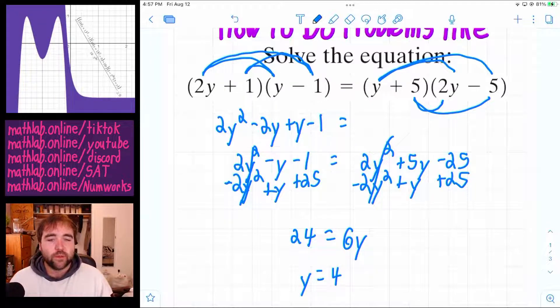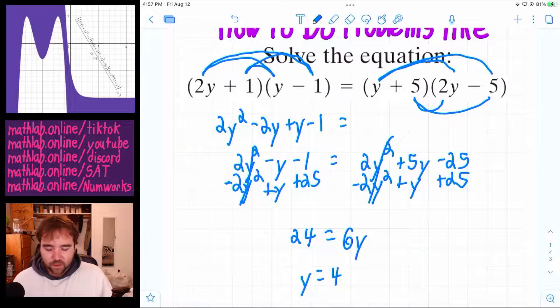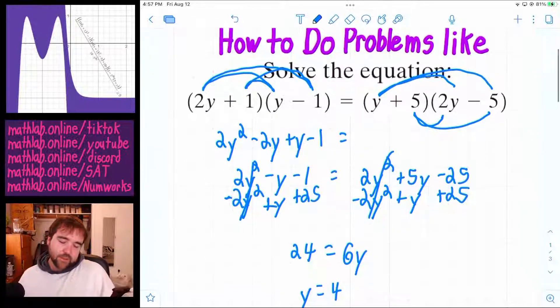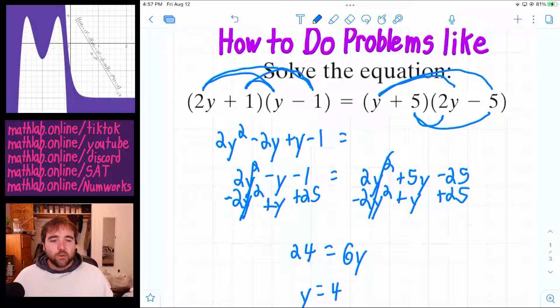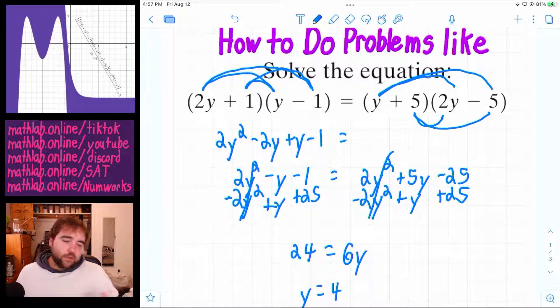And so for now, these are designed to get those to cancel out like that. They won't always be. But for now they are. And anyway, you look at a problem and you say, what can you do? You can foil. So go ahead and do that. And then you just combine like terms and you just see what happens.